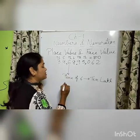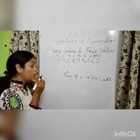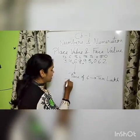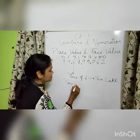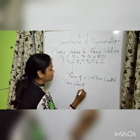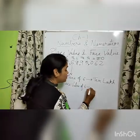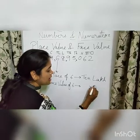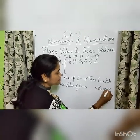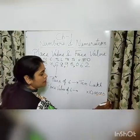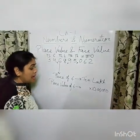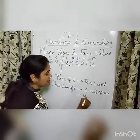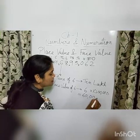This is the place. Similarly, if someone is asking what is the value of six in that place, that is called the place value of six. So place value is: in which place is it? It is in the ten lakhs place. And its value is six, so its place value is 60 lakhs.